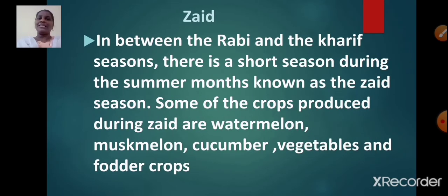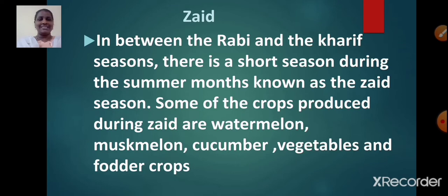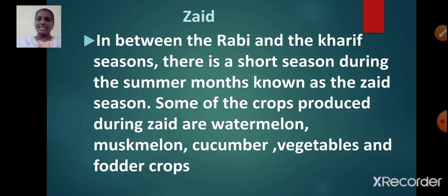Now let us learn about Zaid. In between the Rabi and the Kharif seasons, there is a short season during the summer months which is known as the Zaid season. Some of the crops produced during Zaid are watermelon, muskmelon, cucumber, vegetables and fodder crops.